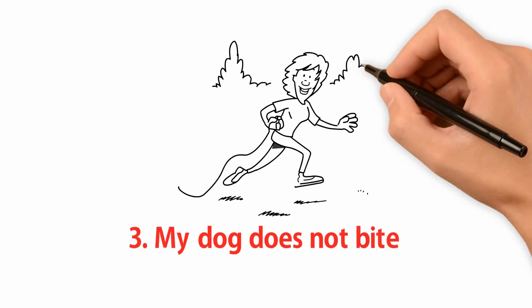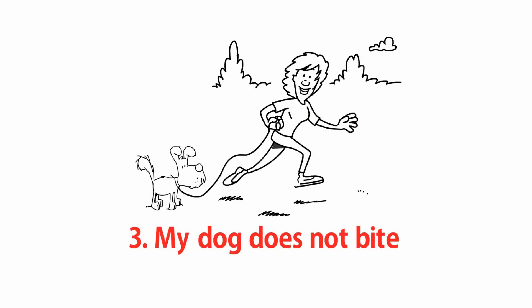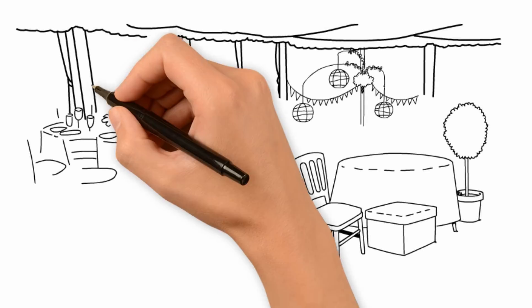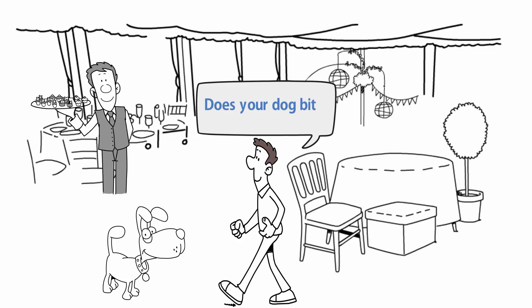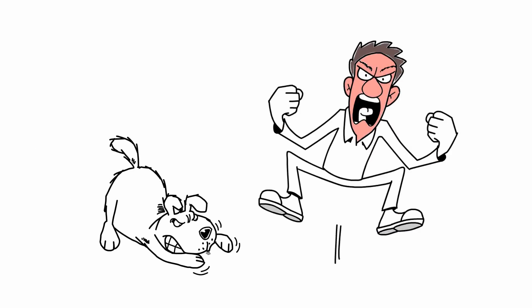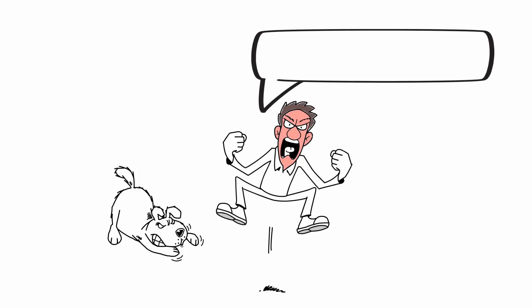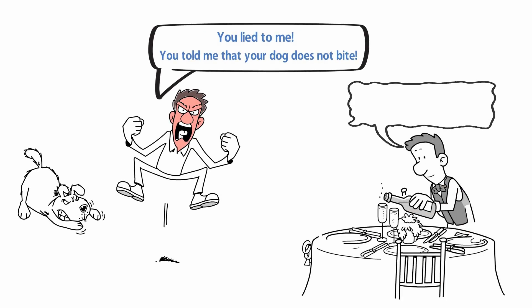Story 3: My dog does not bite. A man walked into a restaurant and saw a cute little dog. He asked the shopkeeper, "does your dog bite?" The shopkeeper replied, "no, it doesn't." The man tried to pet the dog, but to his surprise, the dog bit him. "You lied to me. You told me that your dog does not bite," the man shouted angrily. The shopkeeper calmly replied, "that dog is not mine."